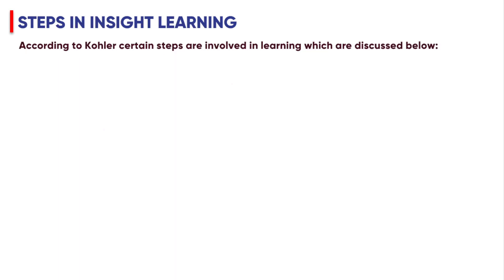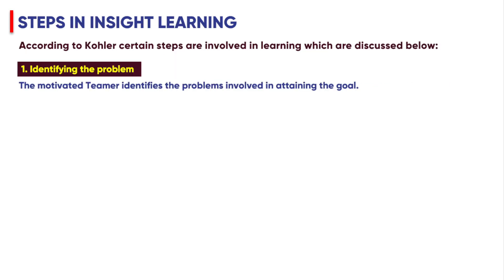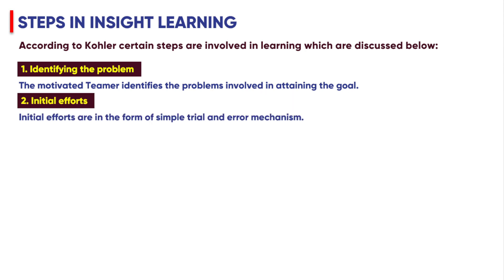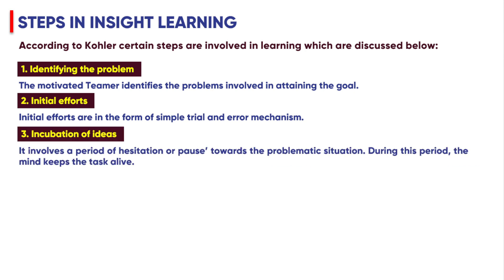Steps in Insight Learning: The first step is identifying the problem — the motivated learner identifies the problems involved in attaining the goal. The second step is initial efforts, which are in the form of simple trial and error mechanisms. The third step is incubation of ideas.